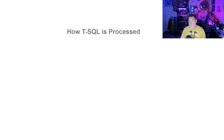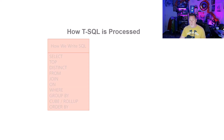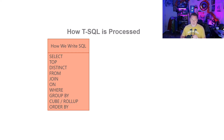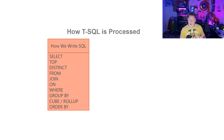First let's talk about the way that things are actually processed in SQL Server. When we write a query, we typically write it like this: SELECT, TOP, DISTINCT, FROM a table, JOIN with an ON condition, a WHERE predicate value, GROUP BY, CUBE, ROLLUP, even an ORDER BY.